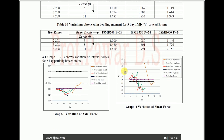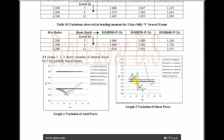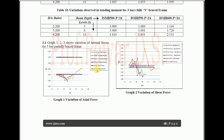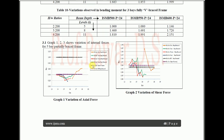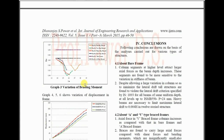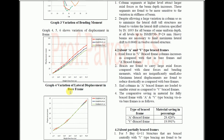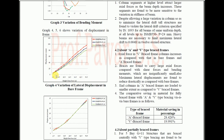The graphs show the variation of internal forces for a 5-bay partially braced frame. In a partially braced frame, bracing is not provided throughout the full model — only in select bays. We also observed the variation in lateral displacement: as the height of the building increases, the displacement in mm increases. This is observed for beam sizes MB 500, MB 550, and MB 600.